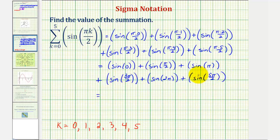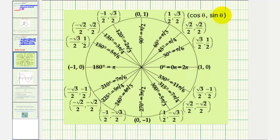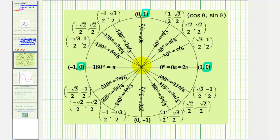To determine the sine function values, we can either reference the unit circle or reference the graph of the basic sine function. On the unit circle, sine theta equals y. So: sine zero equals zero, sine pi over two equals positive one, sine pi equals zero, sine three pi over two equals negative one, sine two pi equals zero, and sine five pi over two equals positive one.